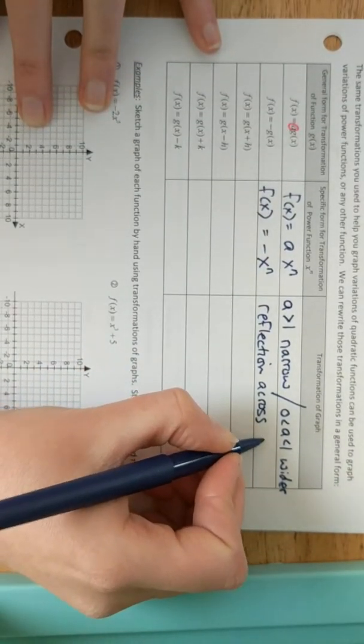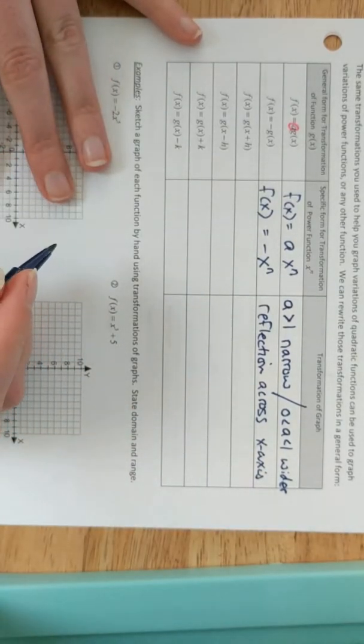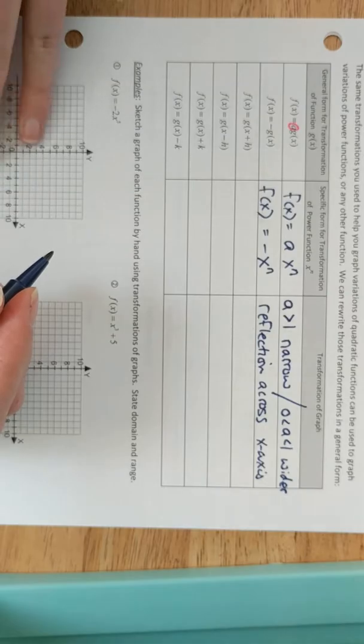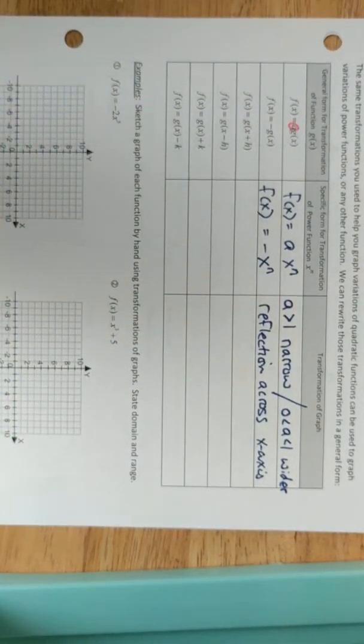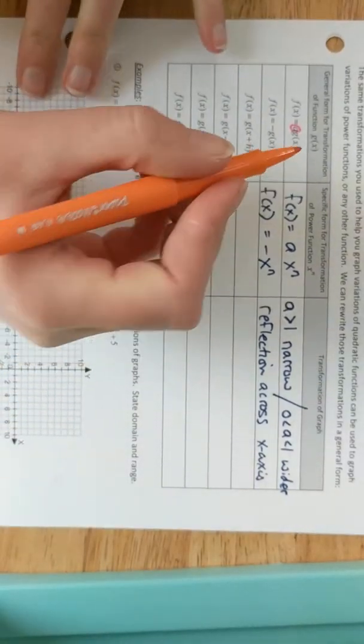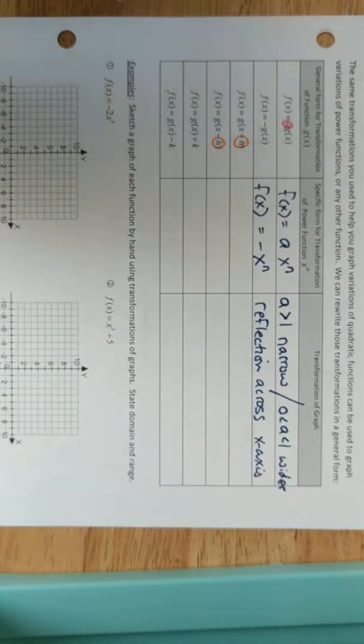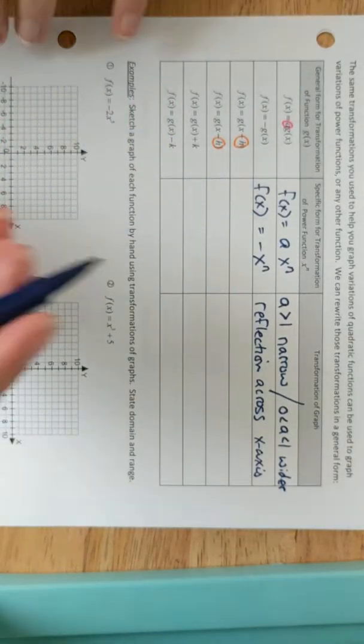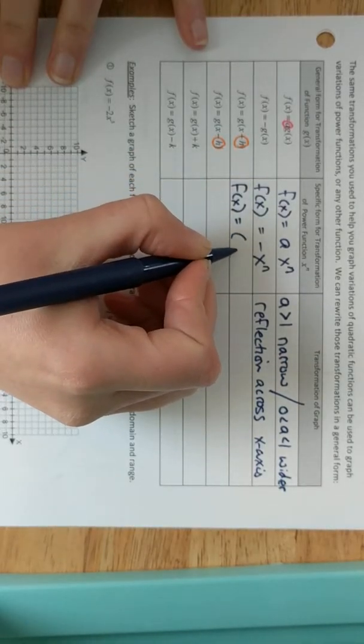Then the next transformation is the negative coefficient. So in terms of the power function, this would be negative x to the n. And just like with quadratics, that's going to be a reflection across the x-axis. Changes the y values to negative, so it flips them from the top down to the bottom, reflection across the x-axis.